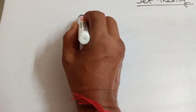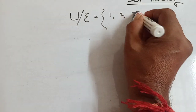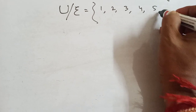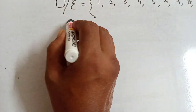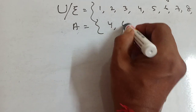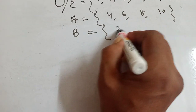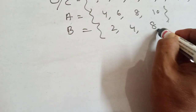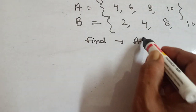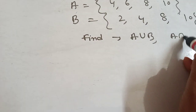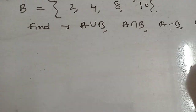Now I will give one example. Universal set U = {1, 2, 3, 4, 5, 6, 7, 8, 9, 10}. Set A = {4, 6, 8, 10}. Set B = {2, 4, 8, 10}. Find: A union B, A intersection B, A minus B, B minus A, A transpose, and B transpose.